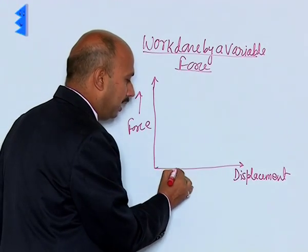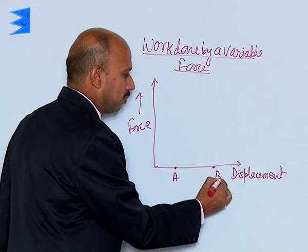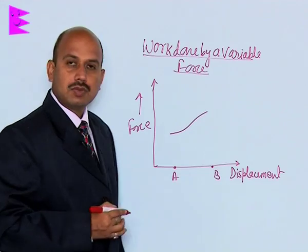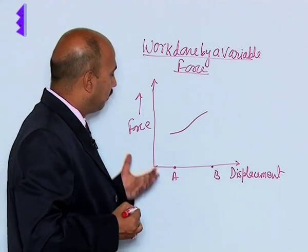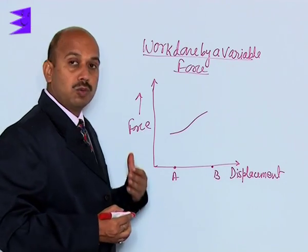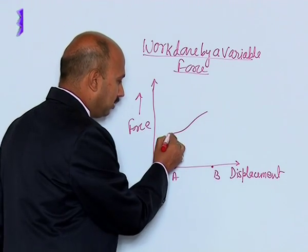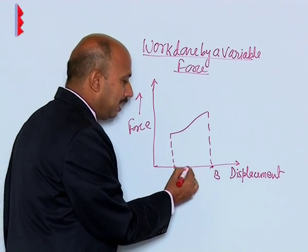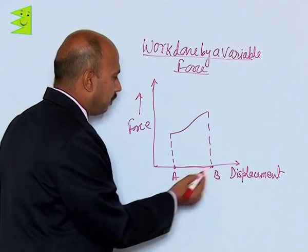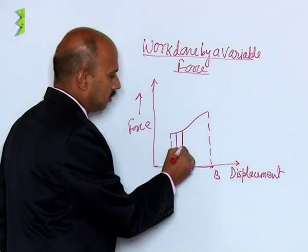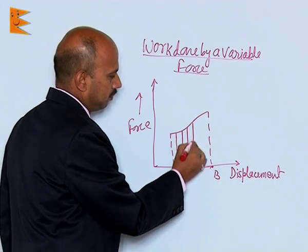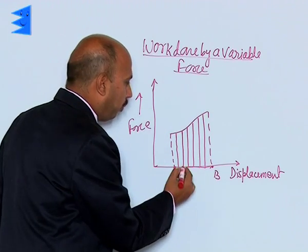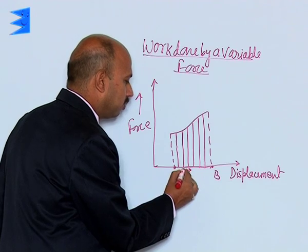Suppose the body is moving from A to B — this is point A and this is point B — and the magnitude of the force is changing something like this. Now we have to calculate the work done by this variable force. First, we join this line and divide line AB into small displacements. Suppose you have taken small displacements like this, and this small displacement is dx.